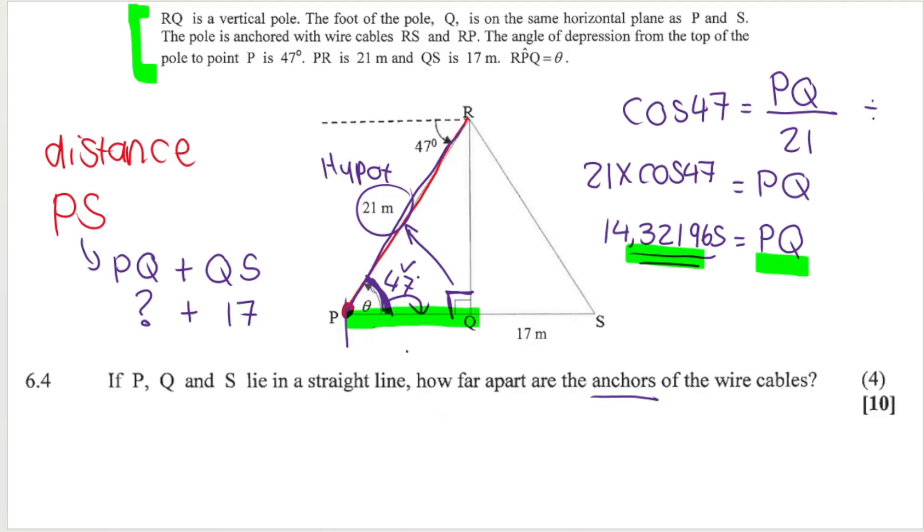I ultimately want from here to here. So I need to add that - the thing I just calculated, 14.32196, I must add that to 17. That's going to get me my total distance. So if I add 17, my final answer for PS or for the distance between the anchors is 31.32 meters.